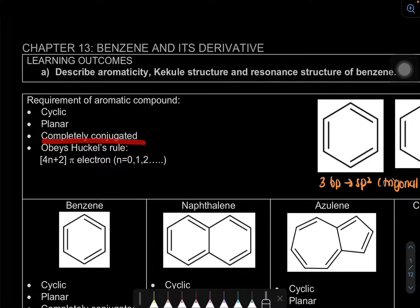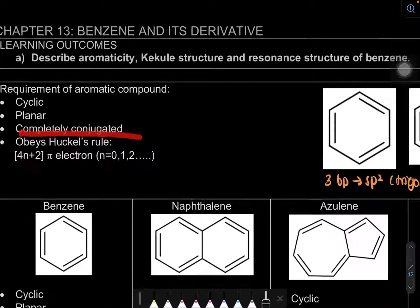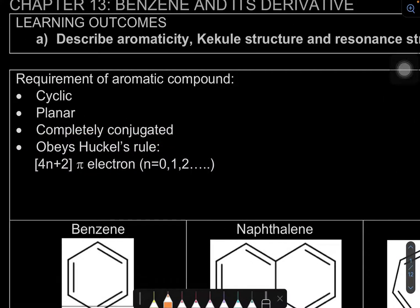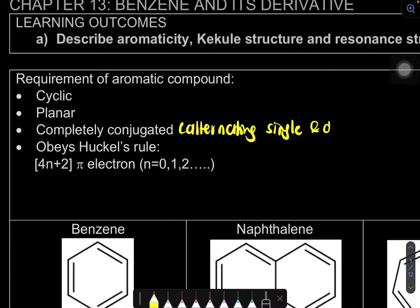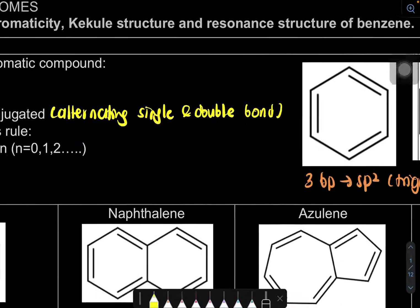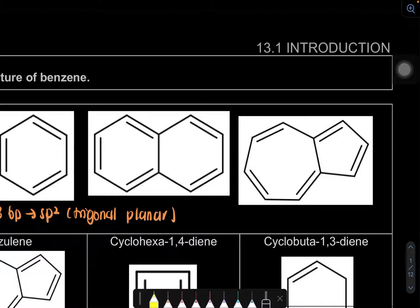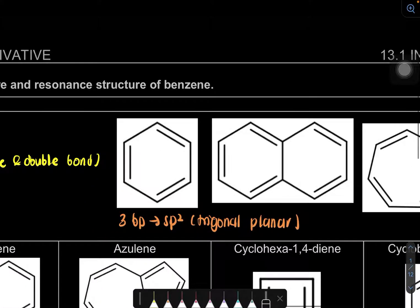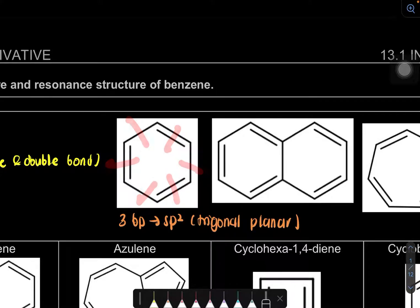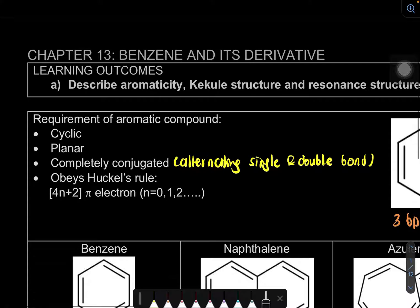The third requirement is that it must be completely conjugated. What does completely conjugated mean? It means we have alternating single and double bonds. For example, if we look at this structure, the double bonds are alternating — double bond, single bond, double bond, single bond — so it is completely conjugated.